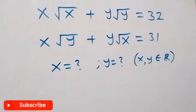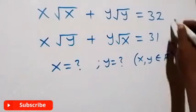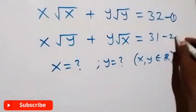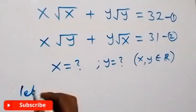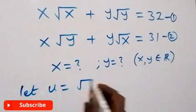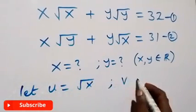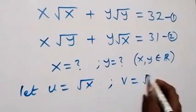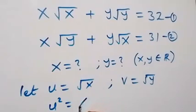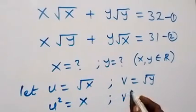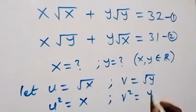Hello, welcome. We are solving a system of equations, finding the values of x and y where x and y are real numbers. Let's call this equation 1 and equation 2. We represent u as root x and v as root y. Squaring both sides gives u squared equals x and v squared equals y.